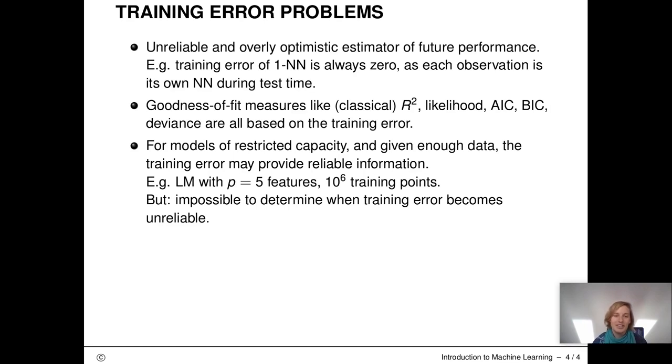The training error for one nearest neighbor is always zero as each observation is its own nearest neighbor during test time, assuming we don't have repeated measurements with conflicting labels. There are so-called interpolators such as interpolating splines and interpolating Gaussian processes